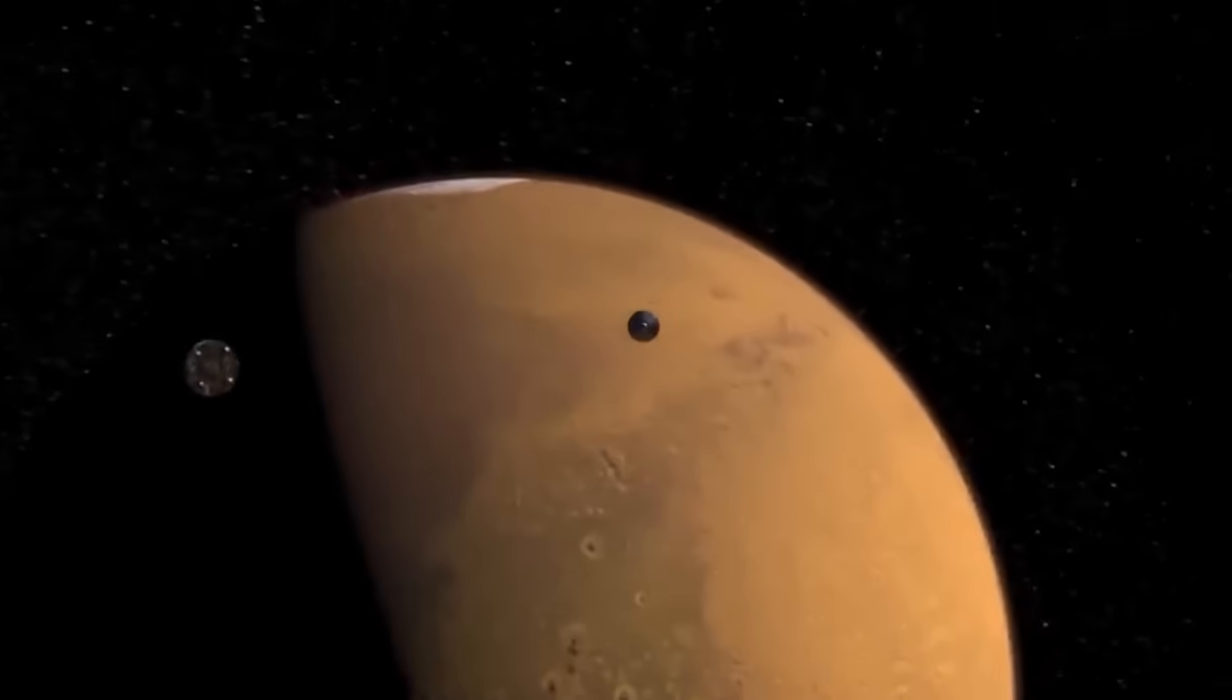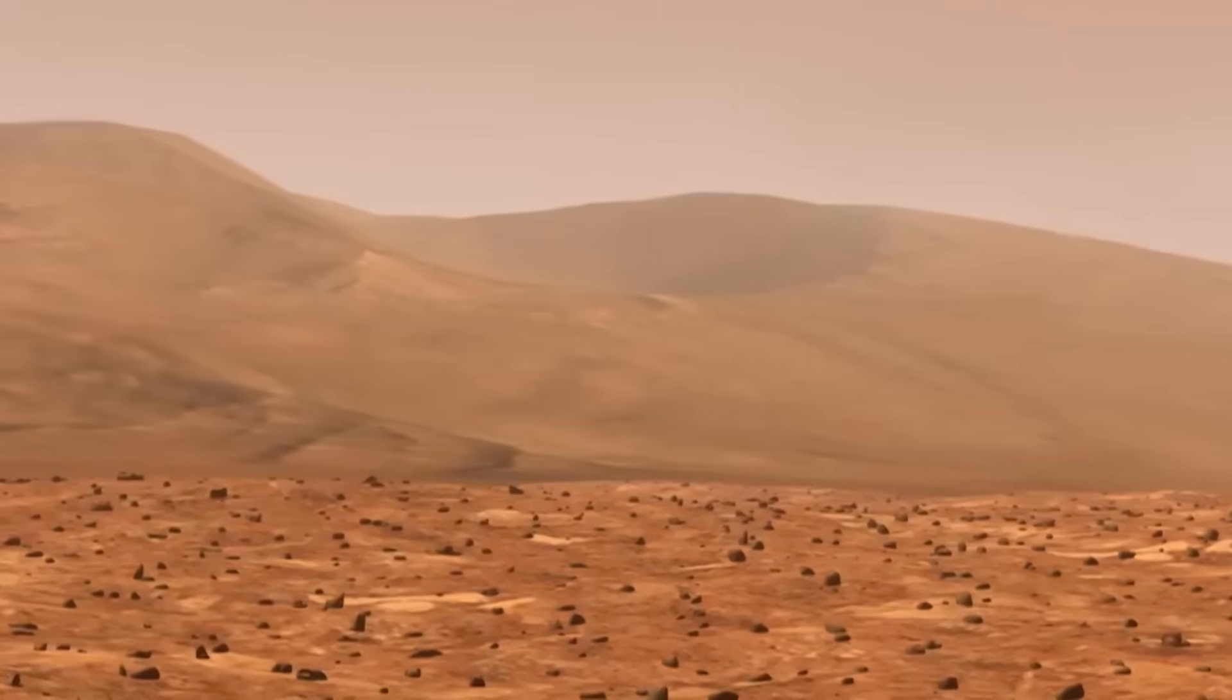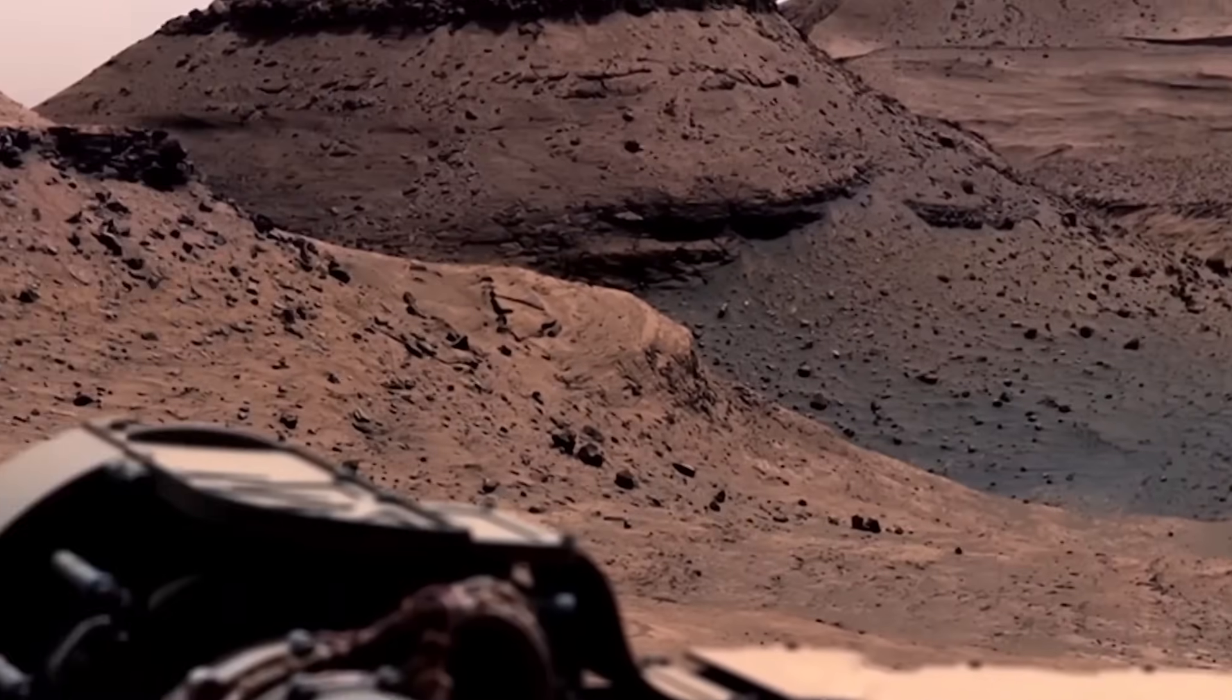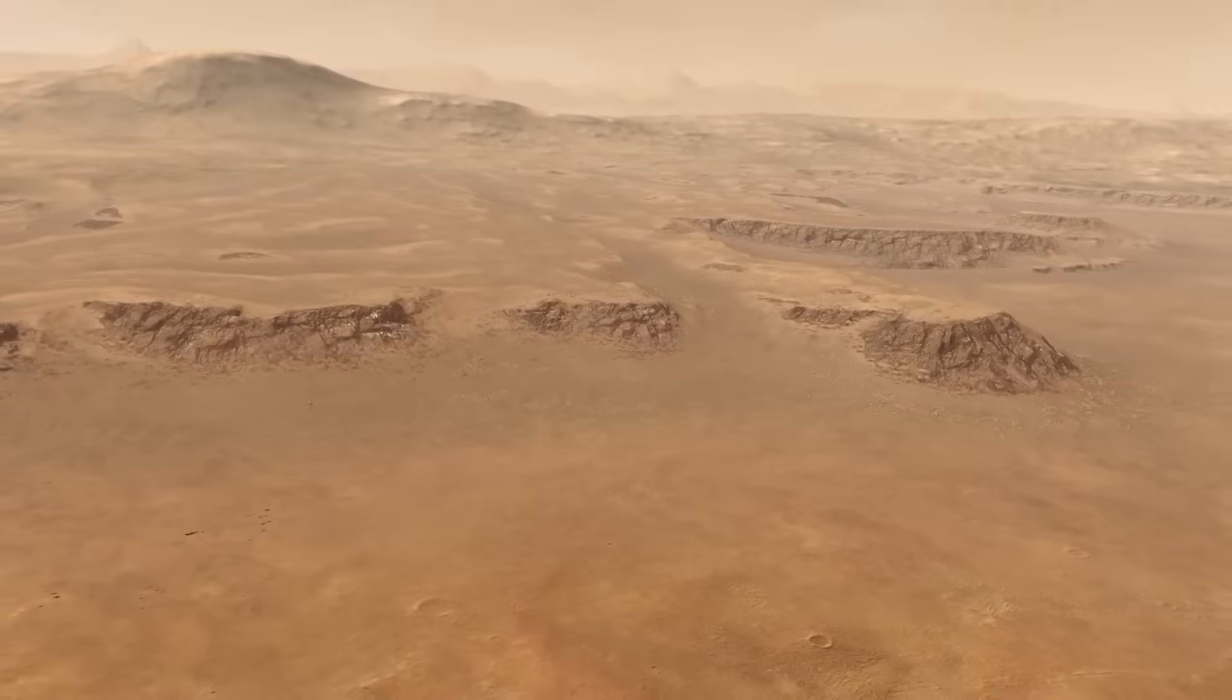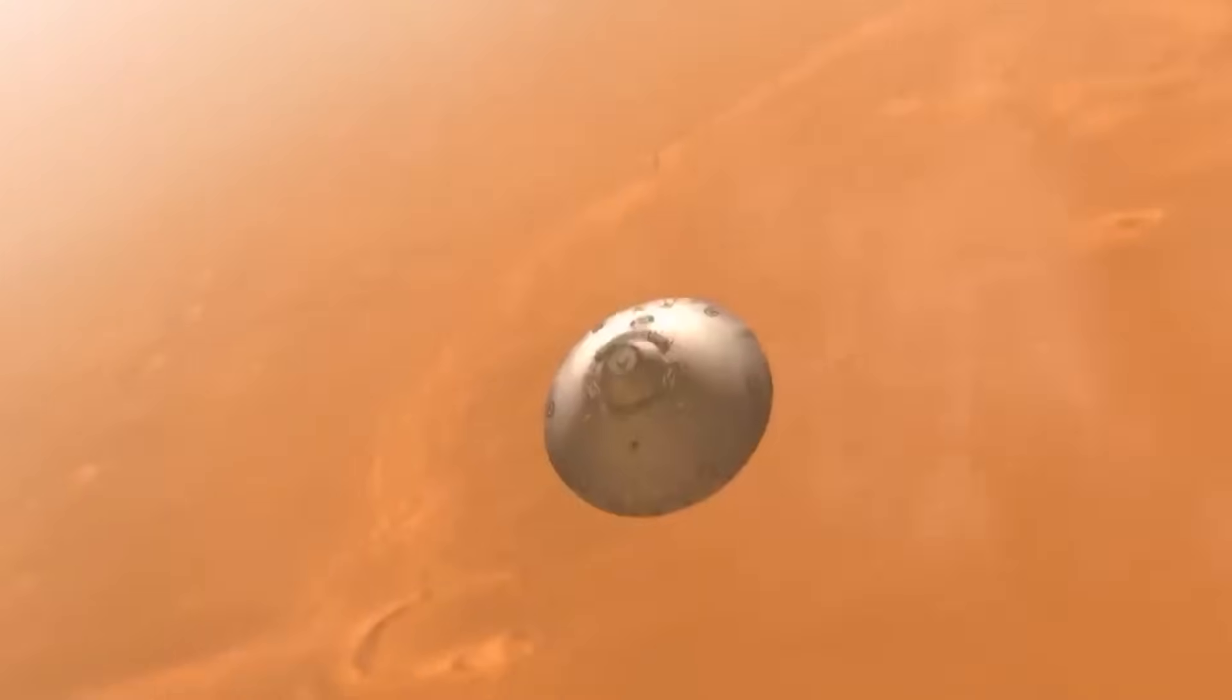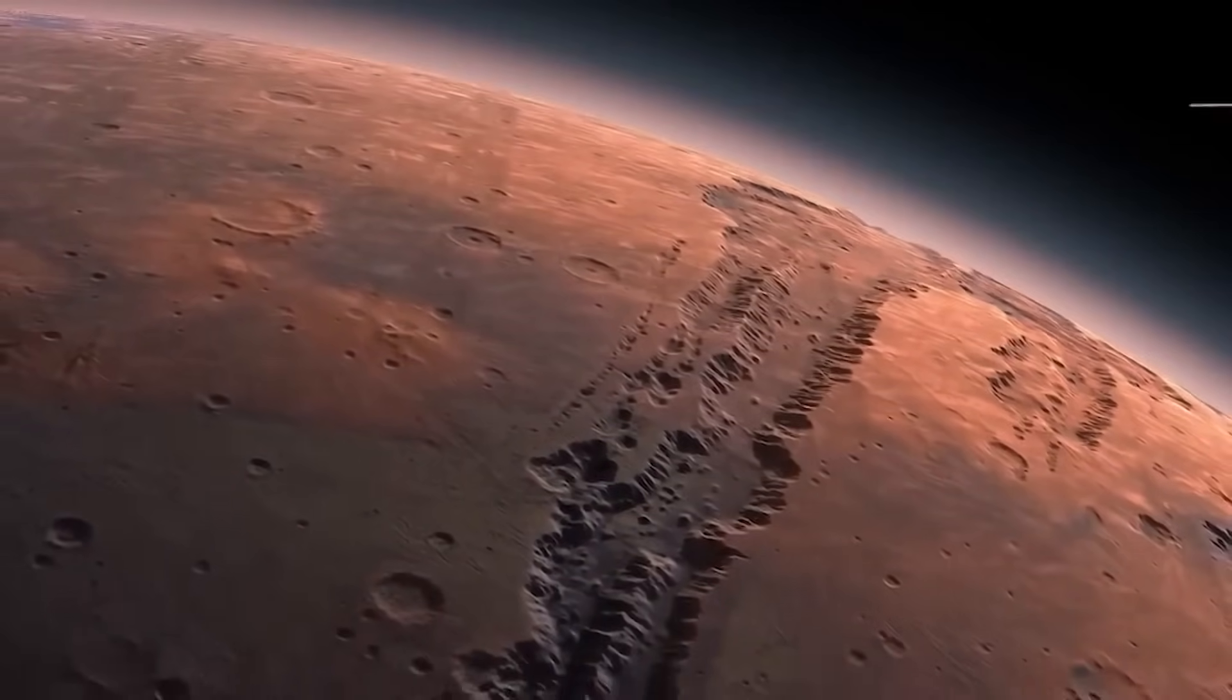Mars, lacking a thick atmosphere, has no real shield against such an event. A strike could carve a crater dozens of kilometers wide, throw dust into the sky for years, and even melt subsurface ice, releasing torrents of water. Paradoxically, that destruction could also create conditions for future habitability—warming the planet, creating temporary lakes, and reshaping its climate.